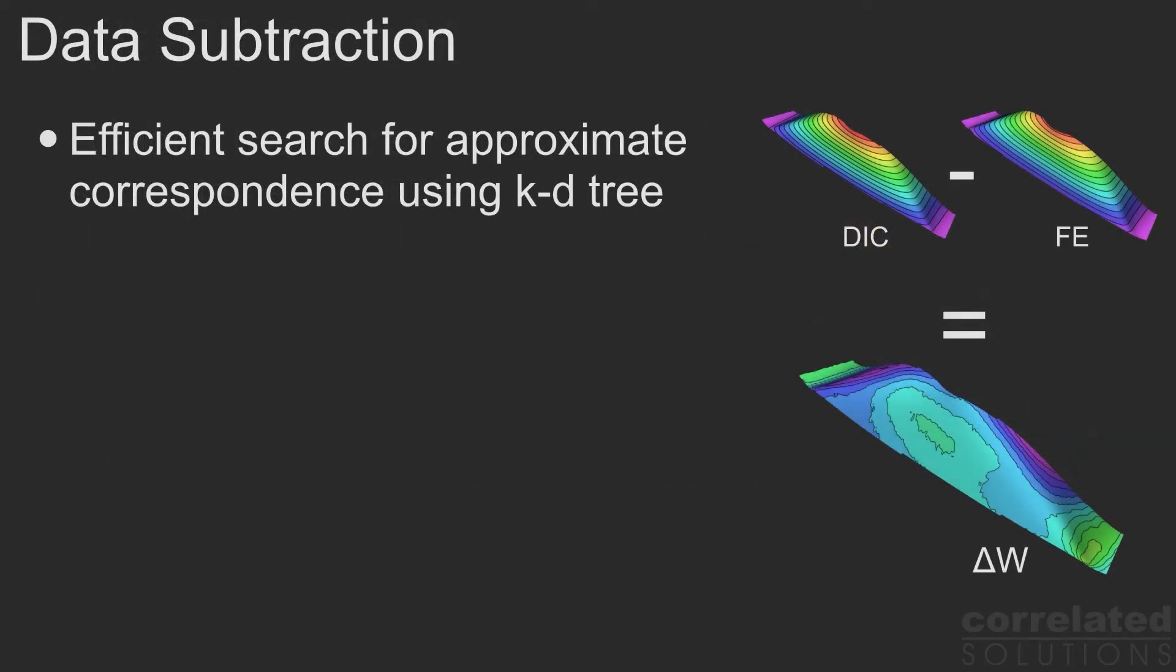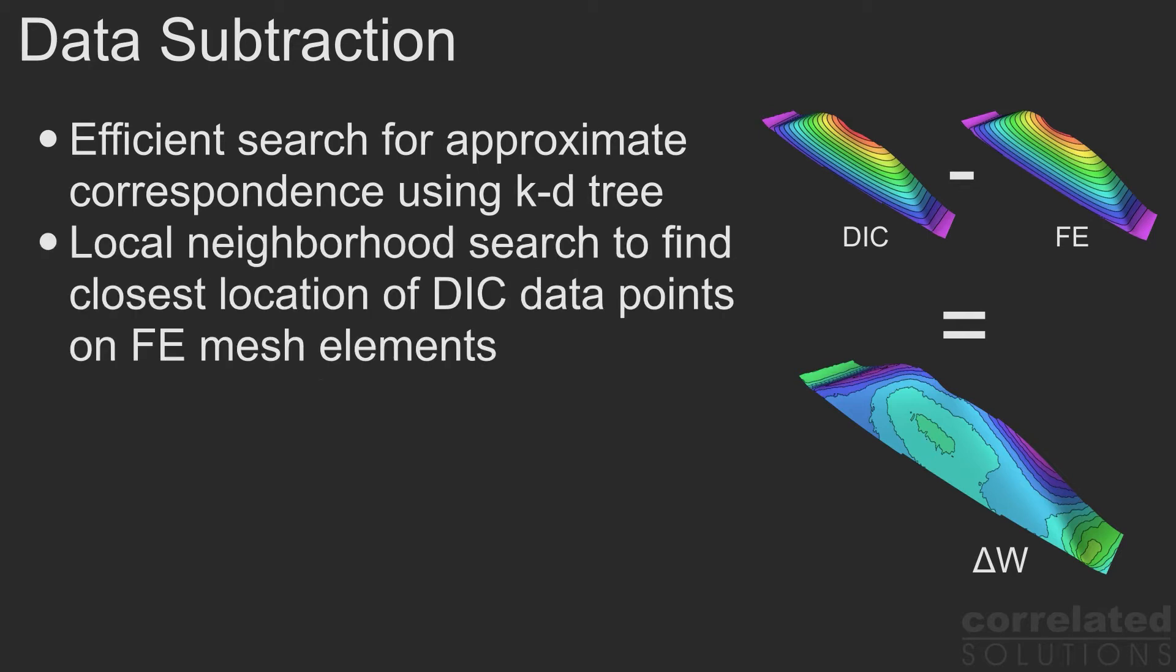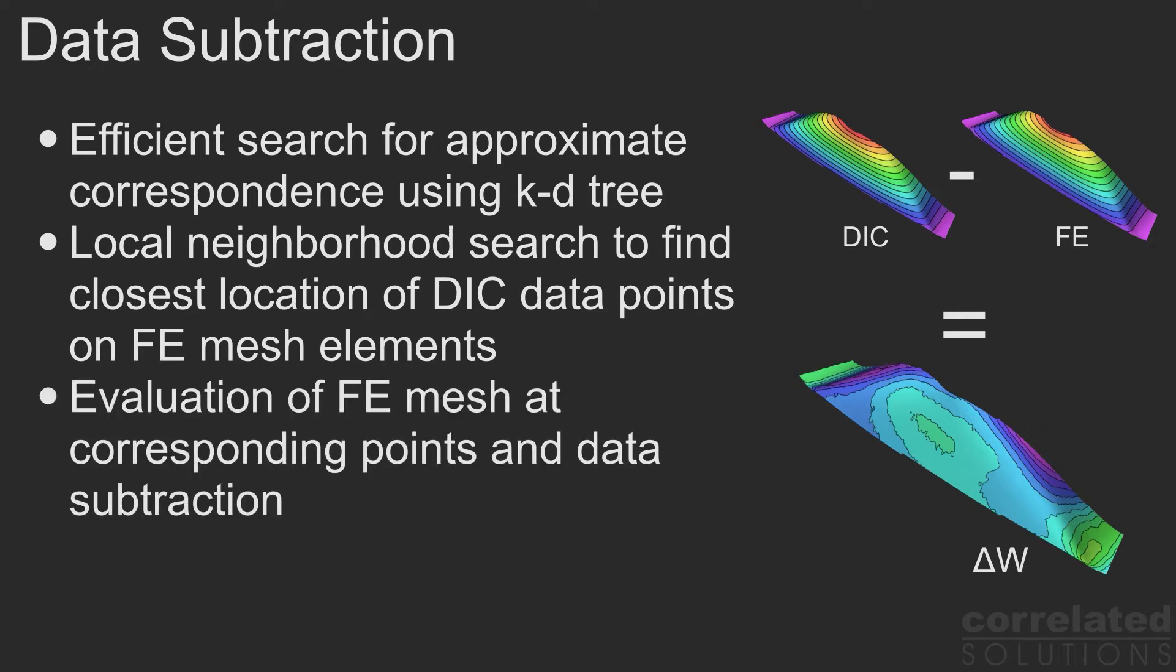The finite element node locations do not generally coincide with the DIC measurement locations. To subtract the FE predictions from the DIC measurements, the FE mesh has to be evaluated between nodes. To do this efficiently, we used a space partitioning scheme. In this case, a KD tree is used to quickly find an approximate correspondence between measurement points and FE nodes. The closest point on the mesh is identified by searching a small neighborhood. After the corresponding mesh location is determined, it is simply a matter of interpolating the FE results using element shape functions and subtracting the results from the measurement data.